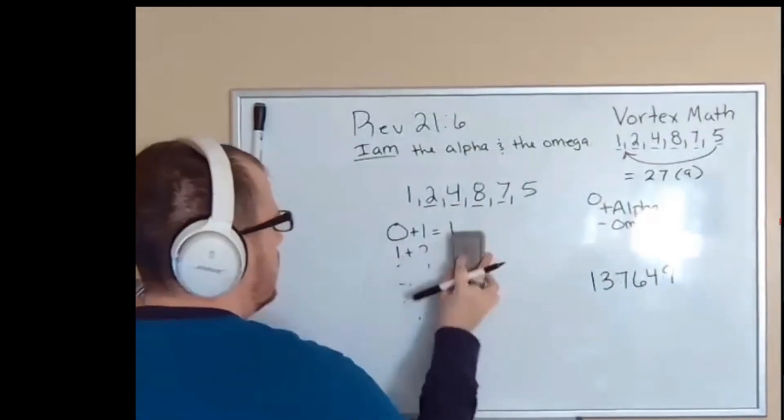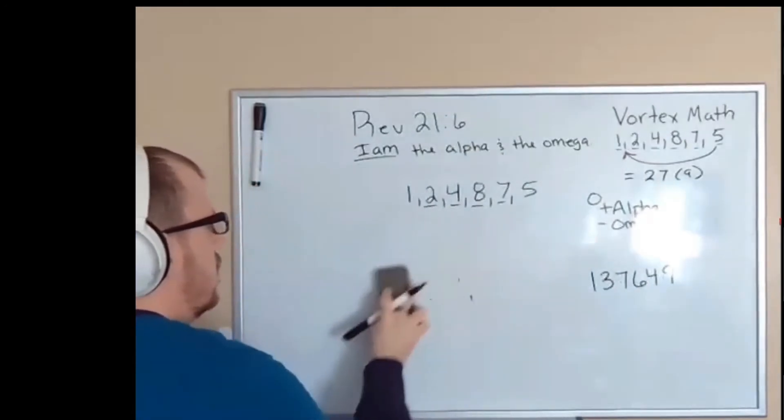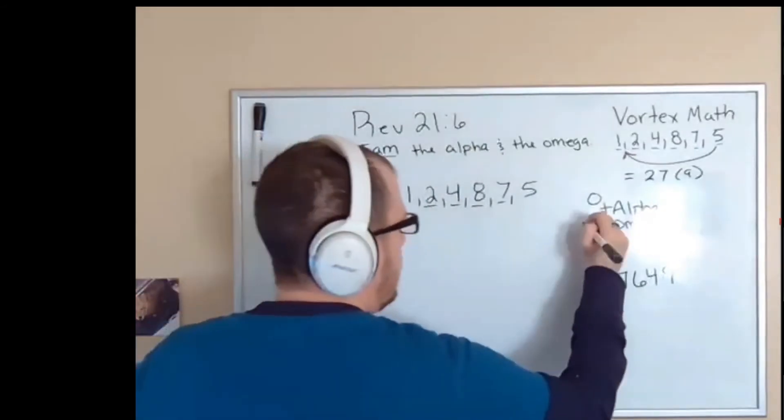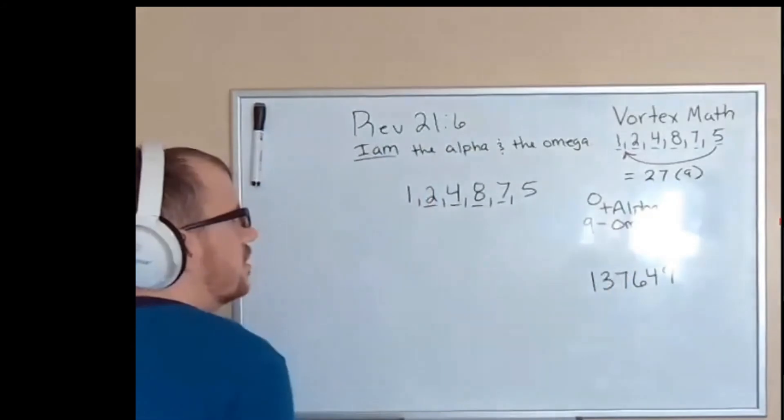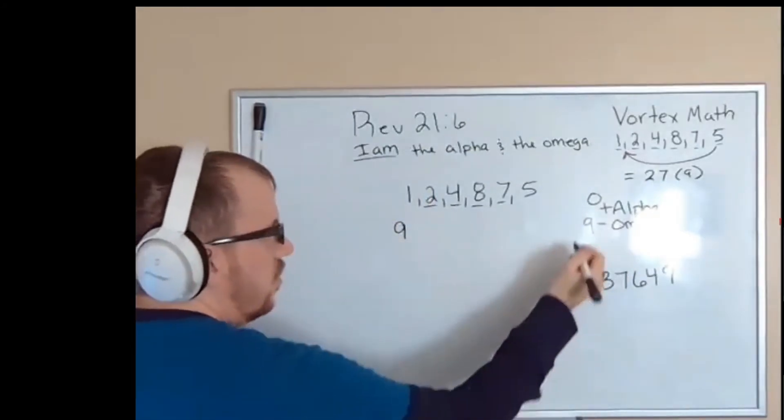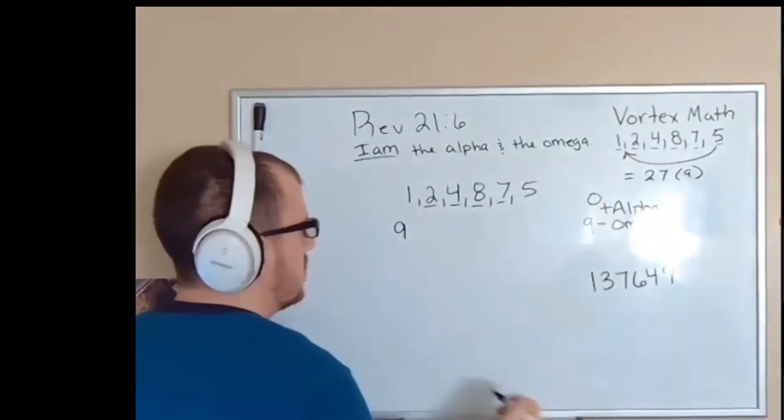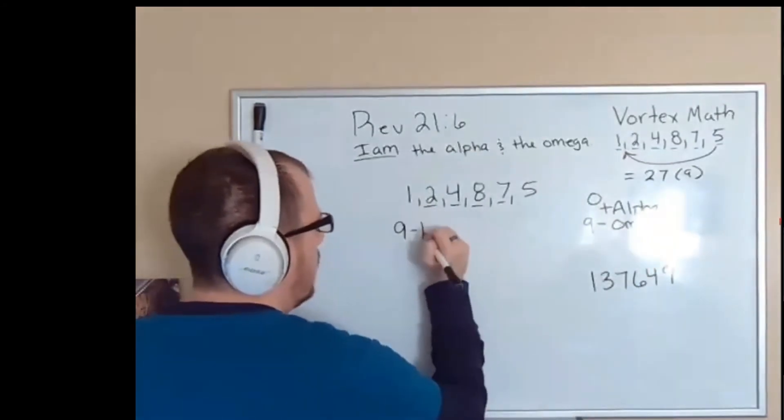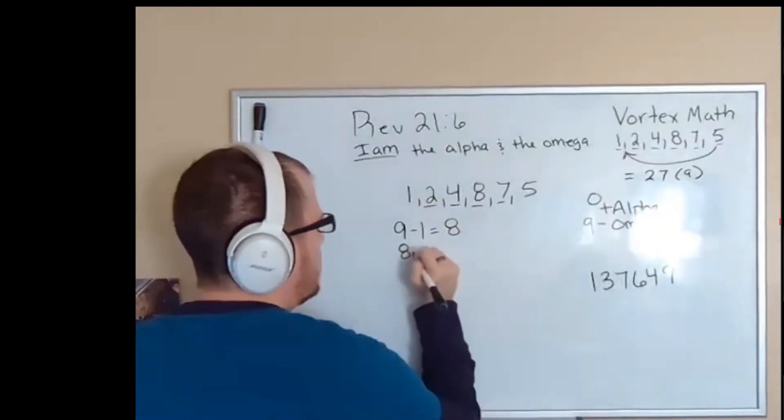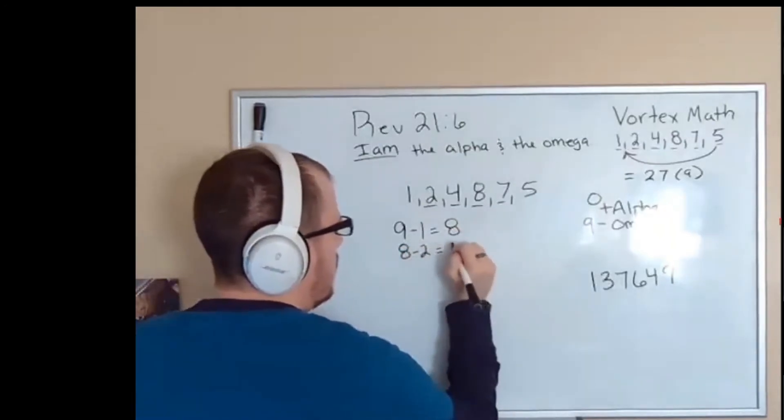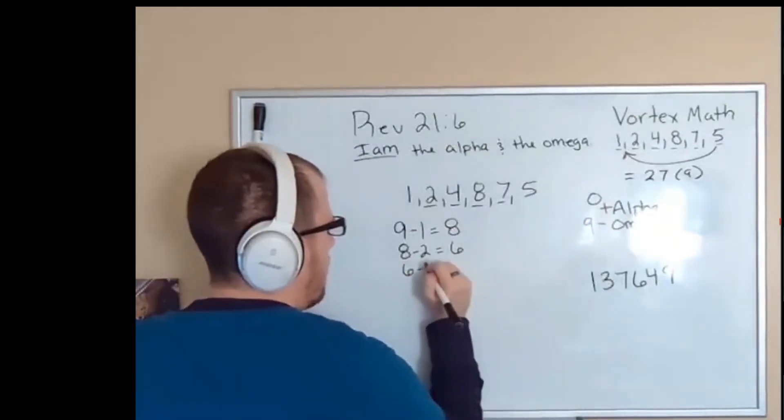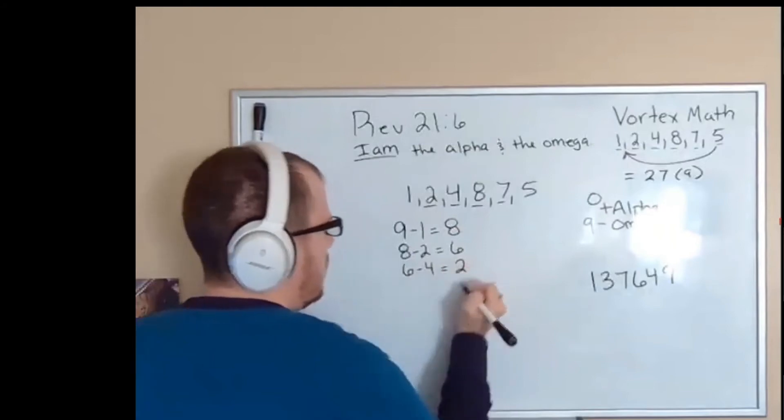Now we're going to also find the omega. We're going to start with nine with the omega, and there's a reason for this. We're going to do the exact same thing, but we are going to subtract. So one was plus one is negative—that's the reason. Nine minus one is eight. Eight minus two is six. Six minus four is two.